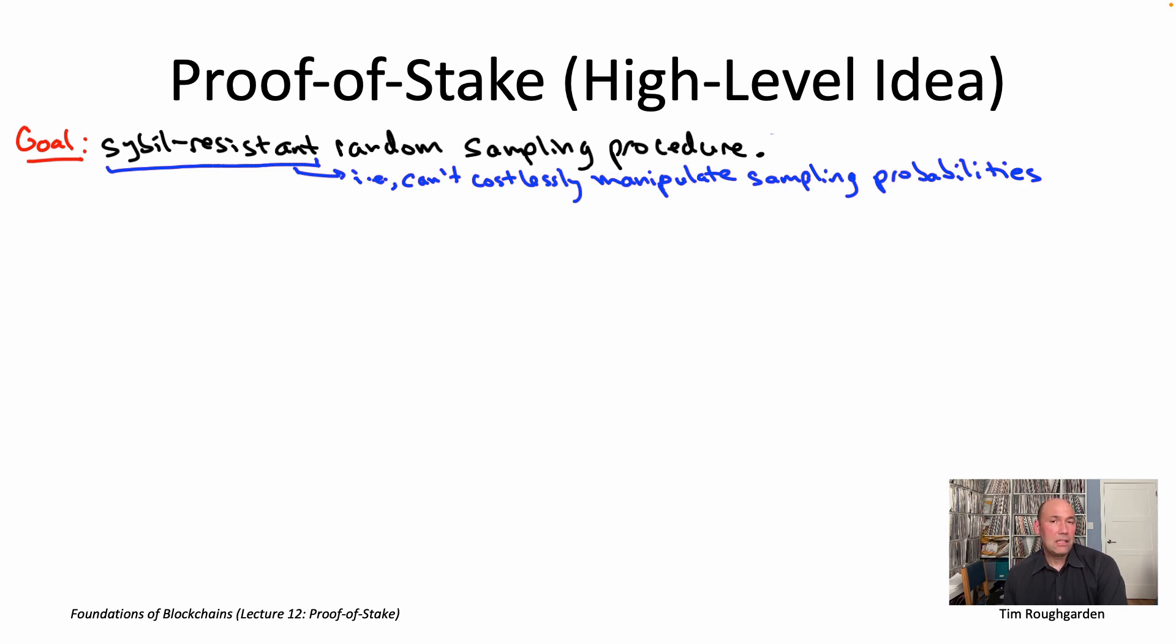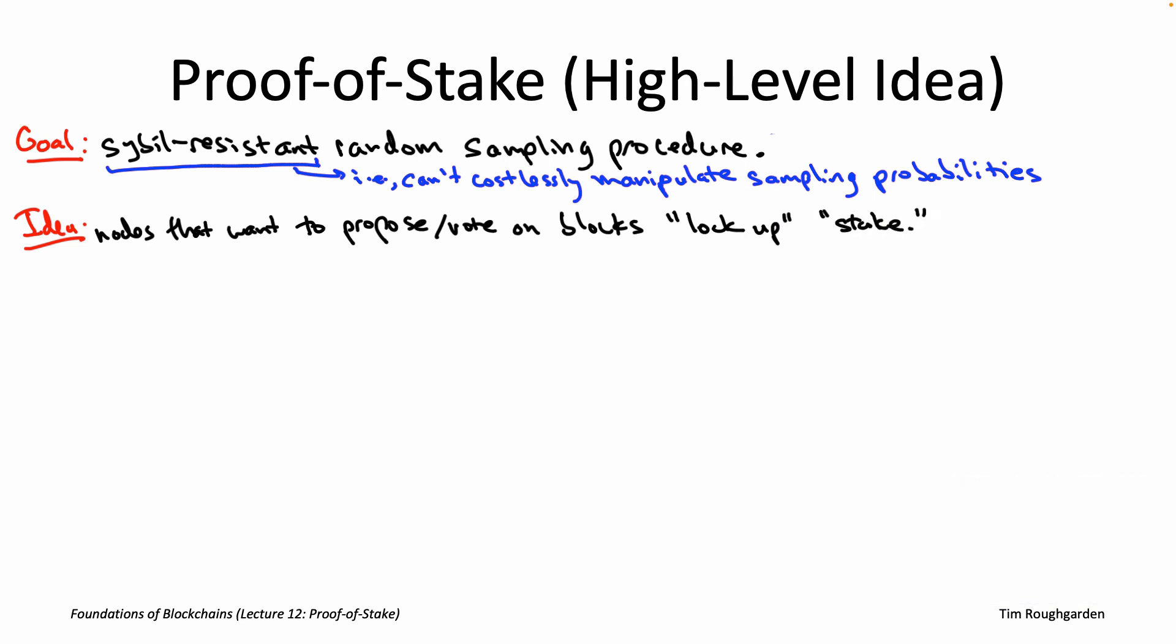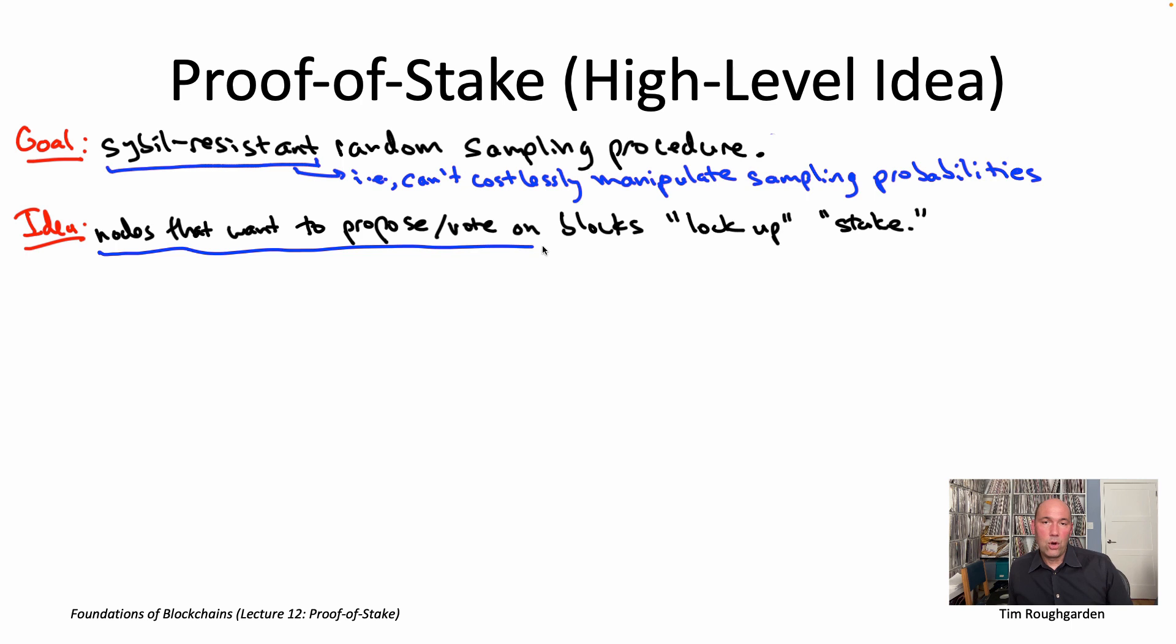So in proof of stake, the high level idea is that any node that wants to contribute, maybe by proposing blocks or voting on blocks, any node that wants to contribute has to lock up some stake. In blockchain protocols that use proof of stake Sybil resistance, the nodes that do this, the nodes that actually lock up stake in order to propose or vote on blocks, they're generally called validators. You can think of them as an analog to the miners that we had that were creating blocks back in Nakamoto consensus in lecture number nine.